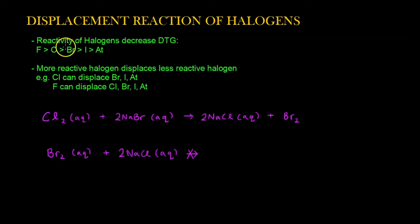Reactivity of halogens decrease down the group. From fluorine all the way to astatine. Fluorine is more reactive than chlorine, which is more reactive than bromine, which is more reactive than iodine, which is more reactive than astatine. Fluorine is the most reactive, astatine is the least reactive. It decreases down the group.